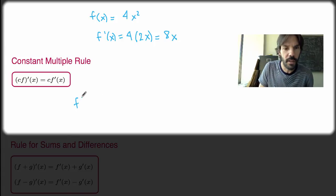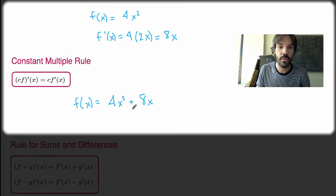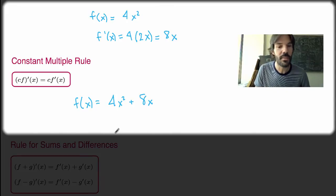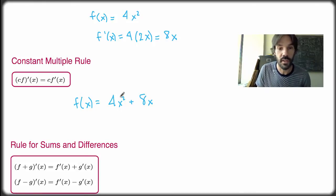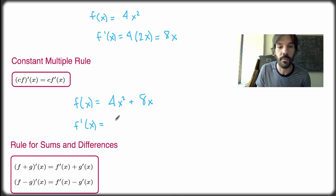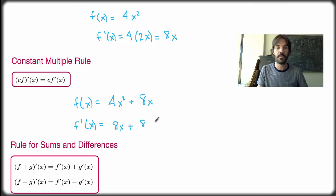What if my function is something like 4x squared plus 8x? Can I calculate its derivative quickly? Fortunately yes, because there's a rule for sums and differences: the derivative of a sum of two functions f and g is just the sum of their derivatives, and the same holds for differences. So the derivative of 4x squared plus 8x is the derivative of 4x squared, which is 8x, plus the derivative of 8x, which by the constant multiple rule is 8 times the derivative of x, which is 1 — so just 8. This is much, much faster than using the definition.